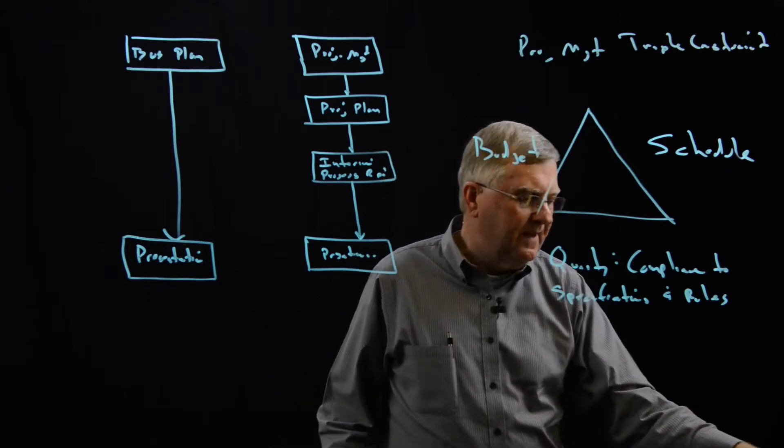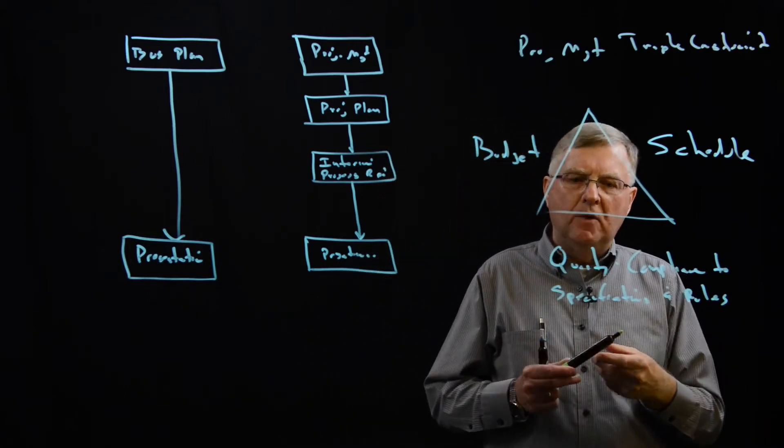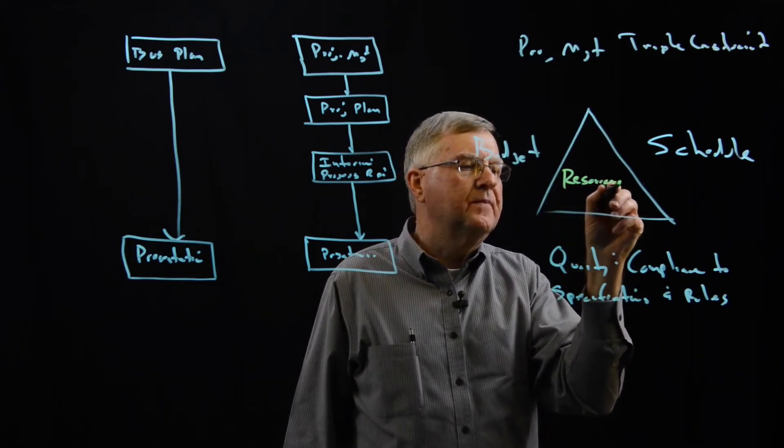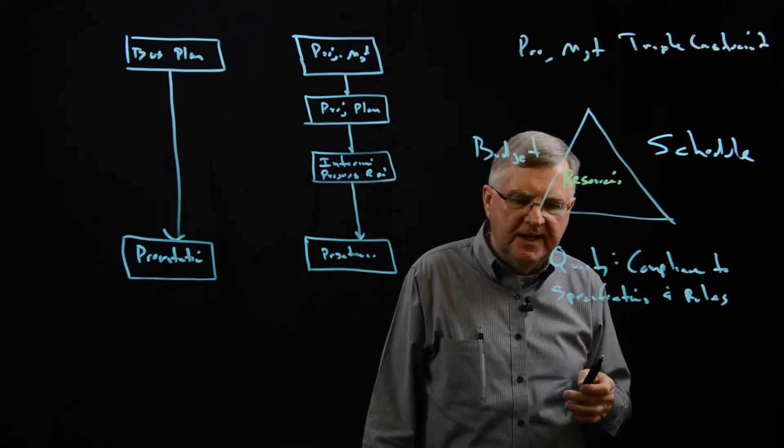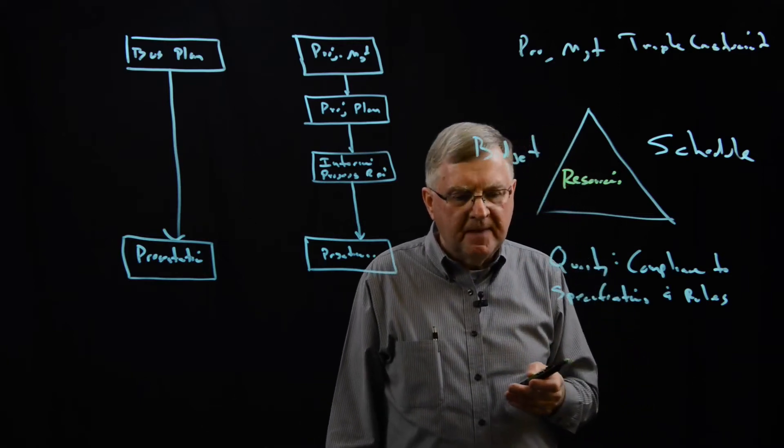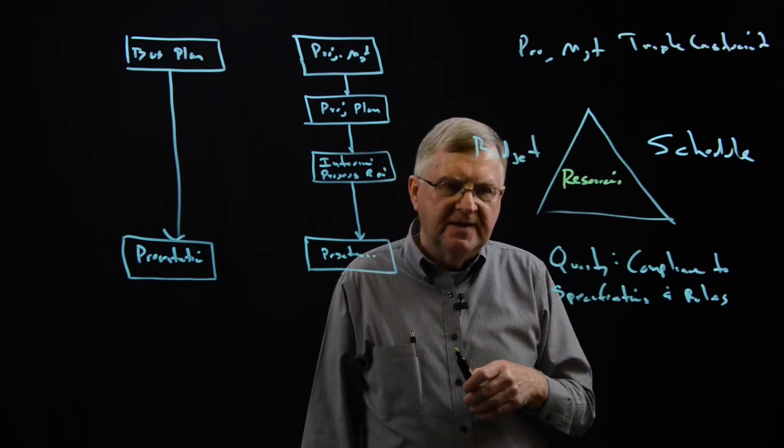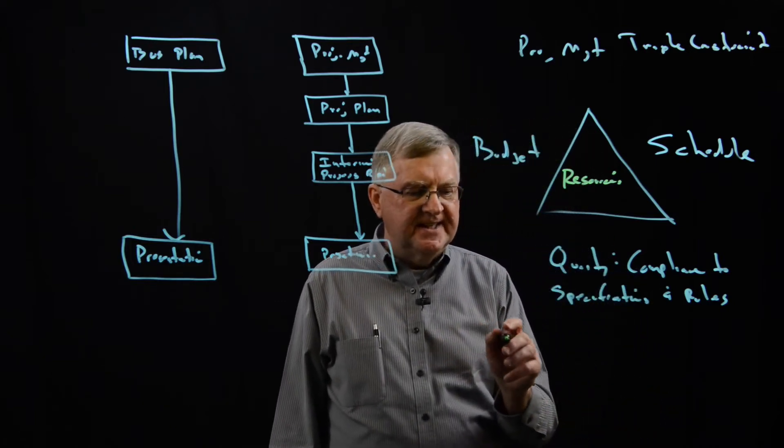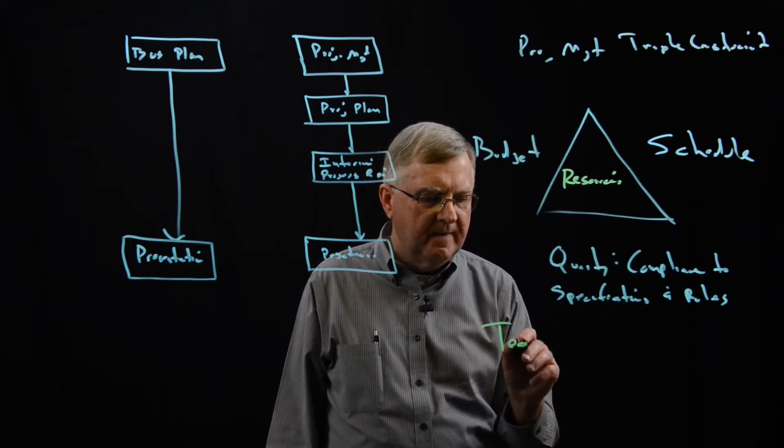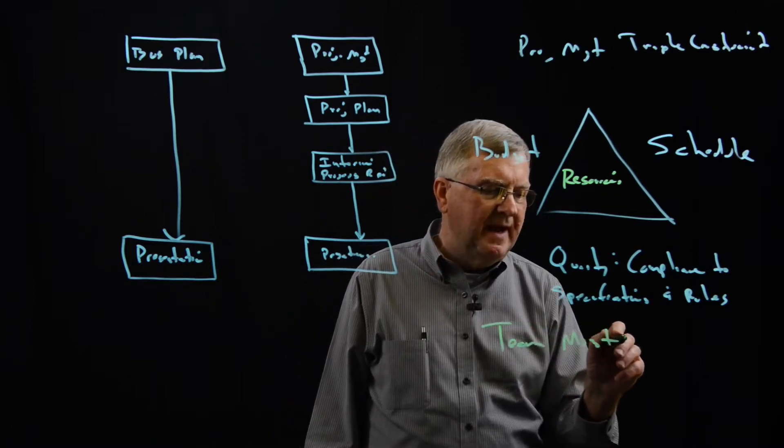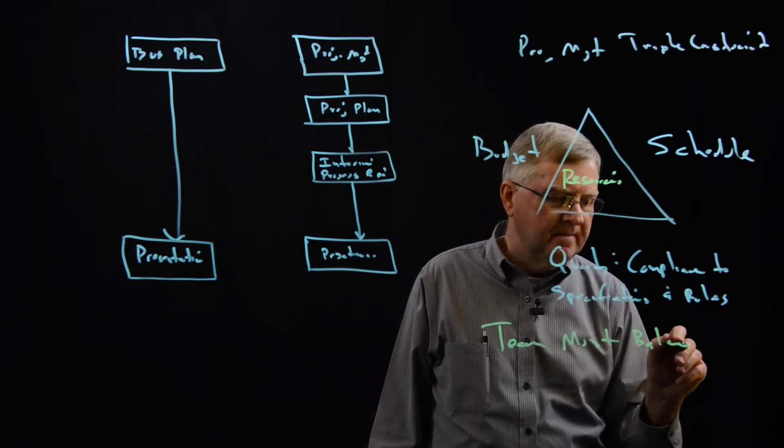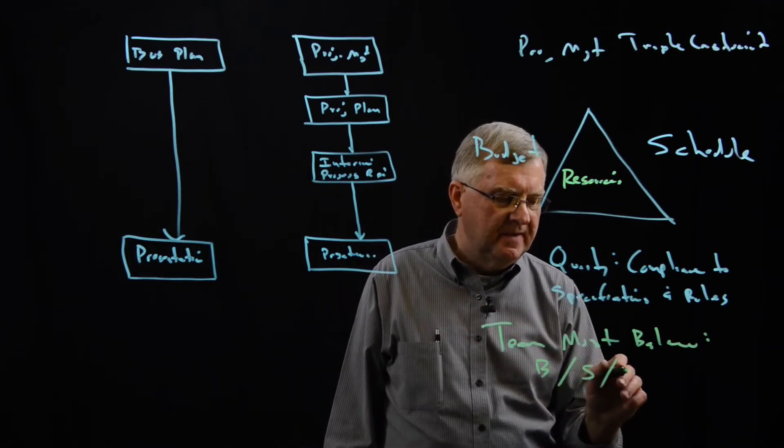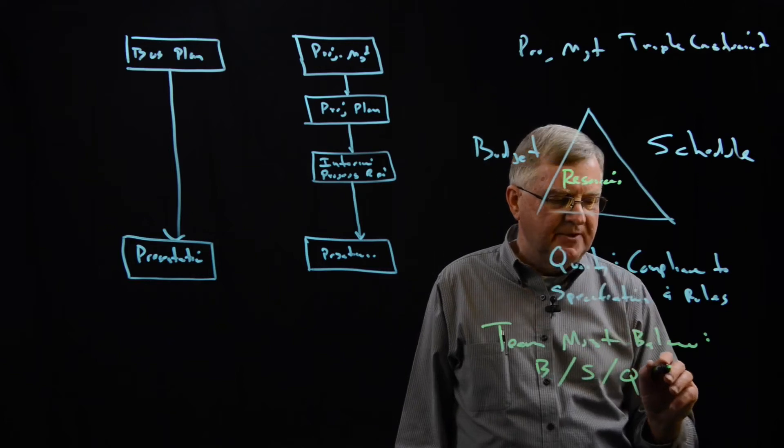Now in meeting the requirements of the triple constraint, we have resources. Resources are facilities, people, and access to experts to help us do things. But to succeed, a team must balance the budget, the schedule, and the quality simultaneously.